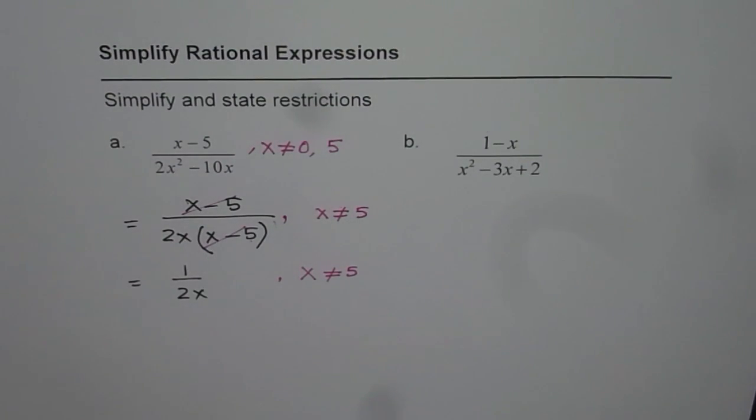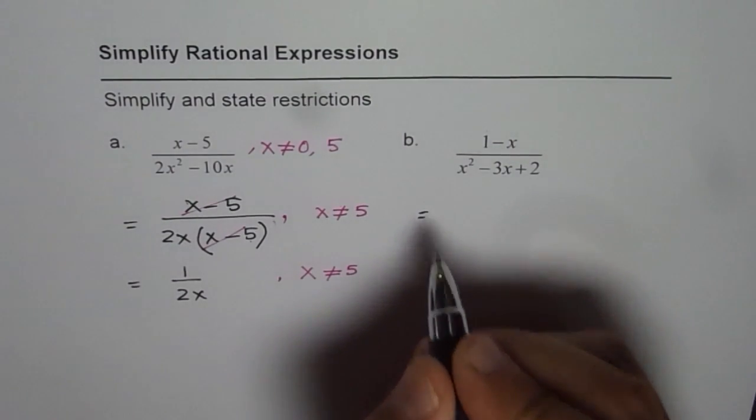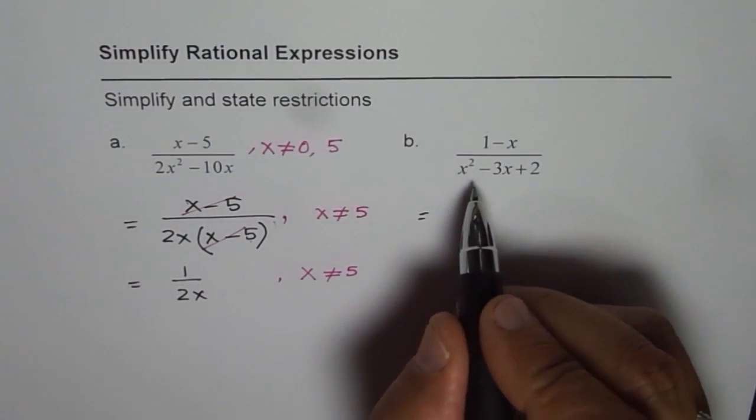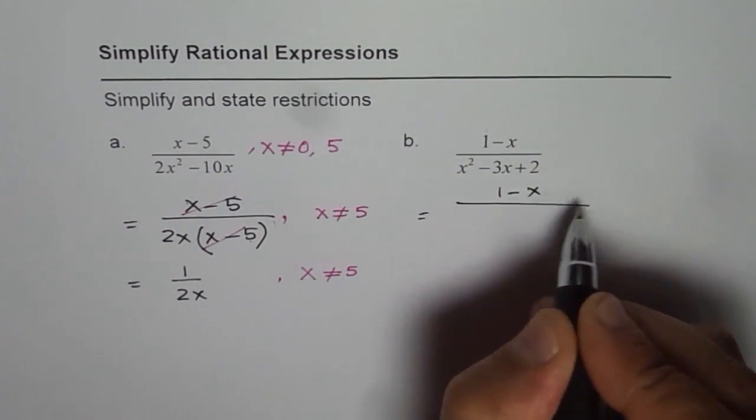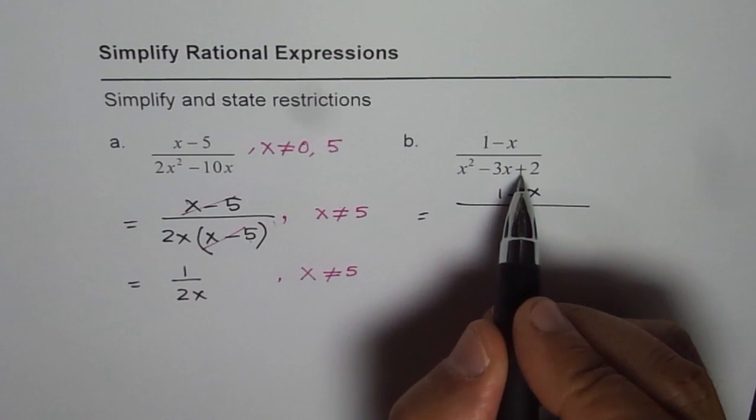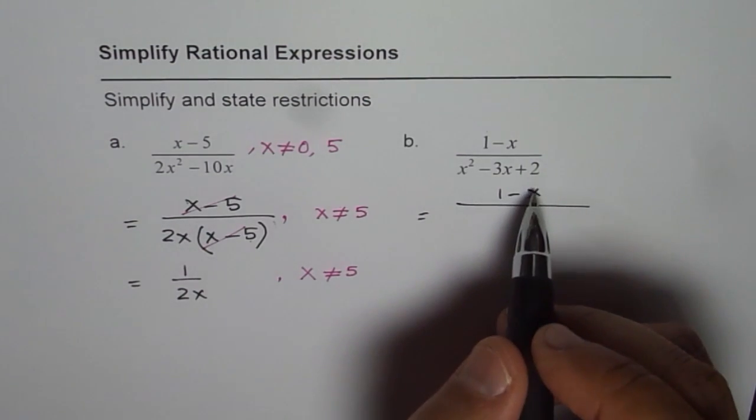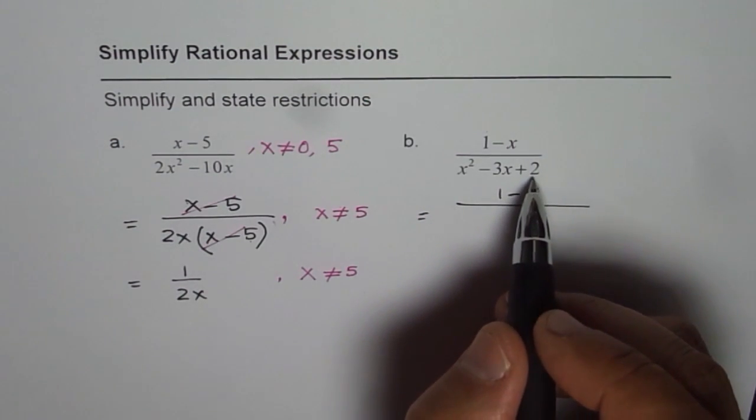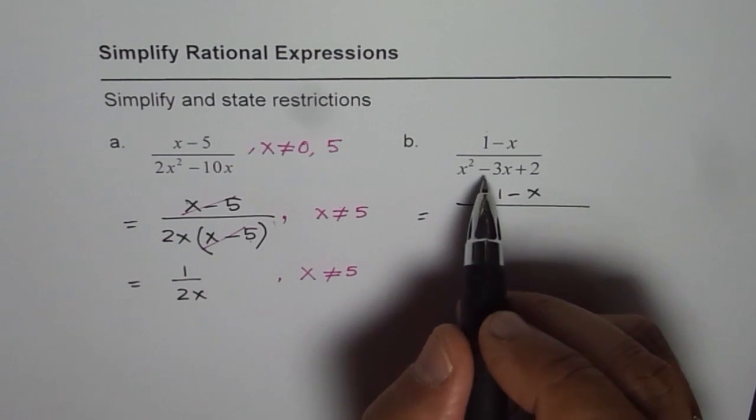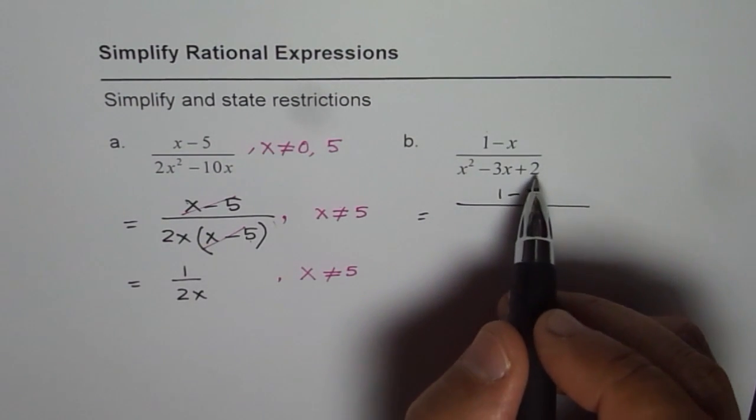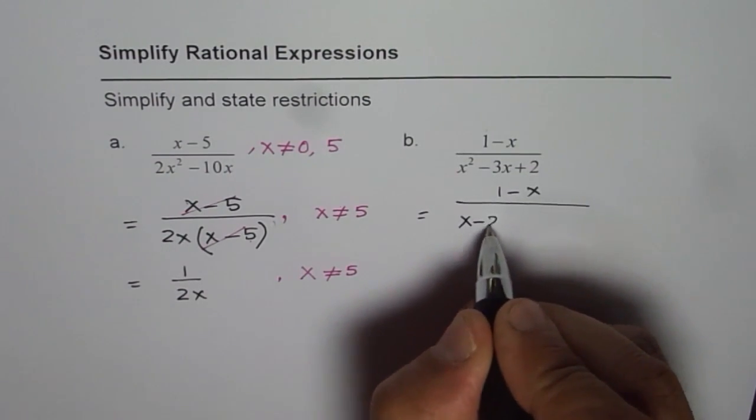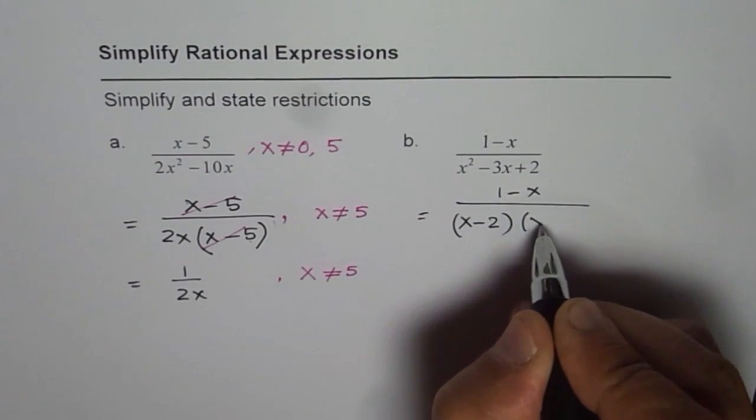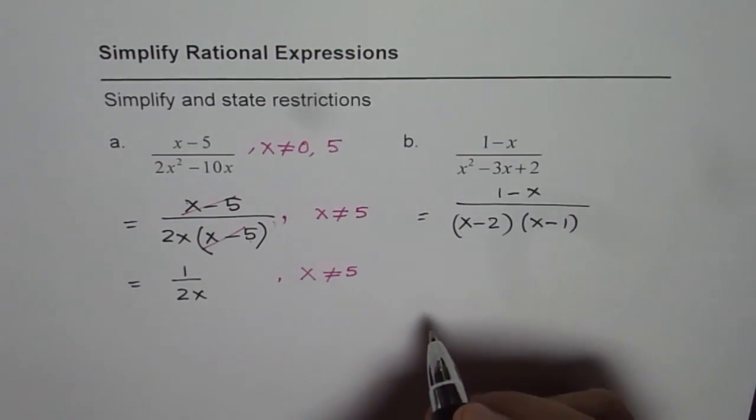So, let us do the next one. To simplify is to find common factors. 1 minus x in the numerator. Here we have x squared minus 3x plus 2. We can factorize. 2 times 1 is 2. We need minus 3 as a sum, so it should be minus 2 times minus 1. So we get x minus 2 times x minus 1 as the denominator.